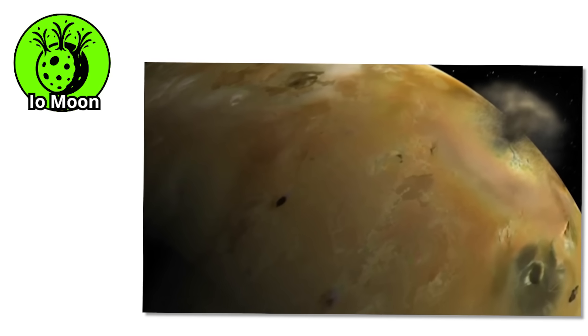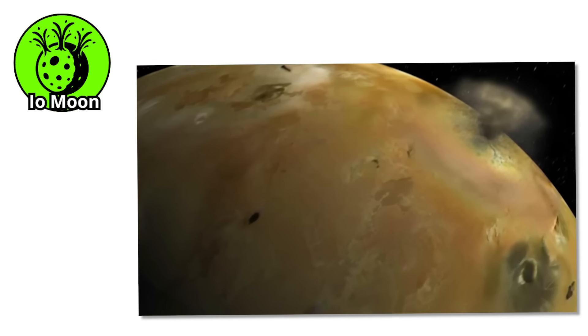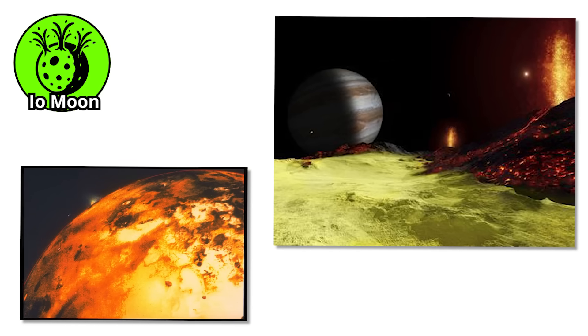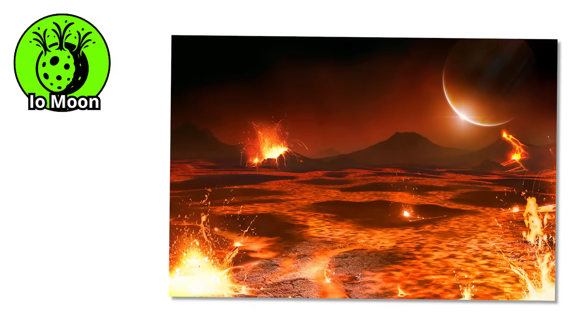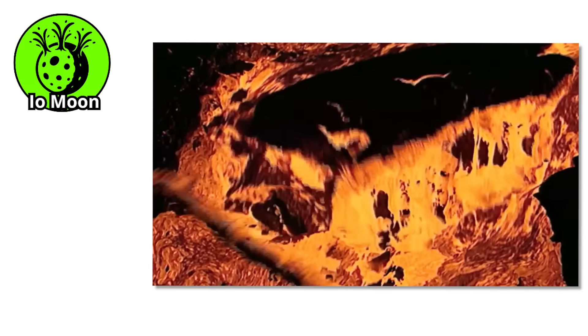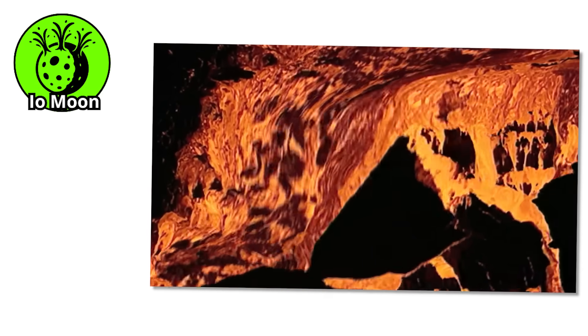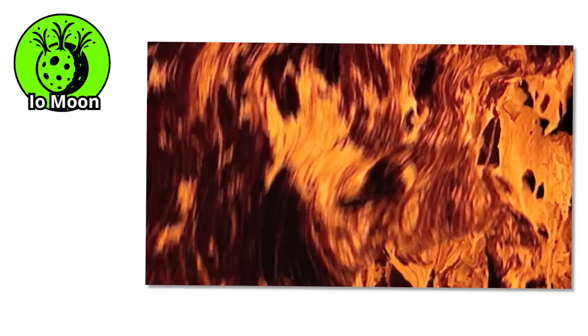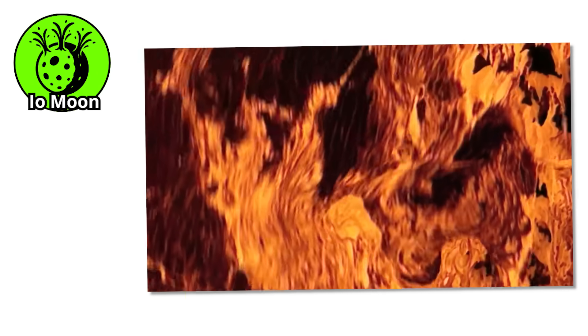Picture a landscape covered in yellow, orange, and red. Not because of sunsets or pretty minerals, but because the ground is stained with sulfur and molten lava. Io's surface is constantly shifting, bubbling, and exploding. It is like someone turned up the heat on a pizza oven and forgot to turn it back down.